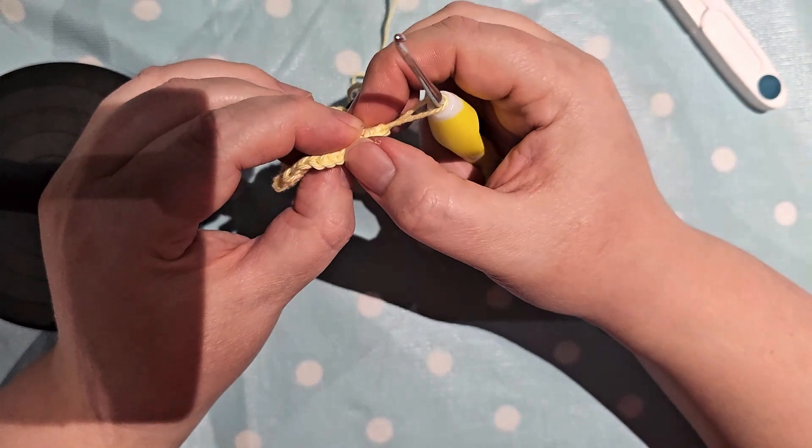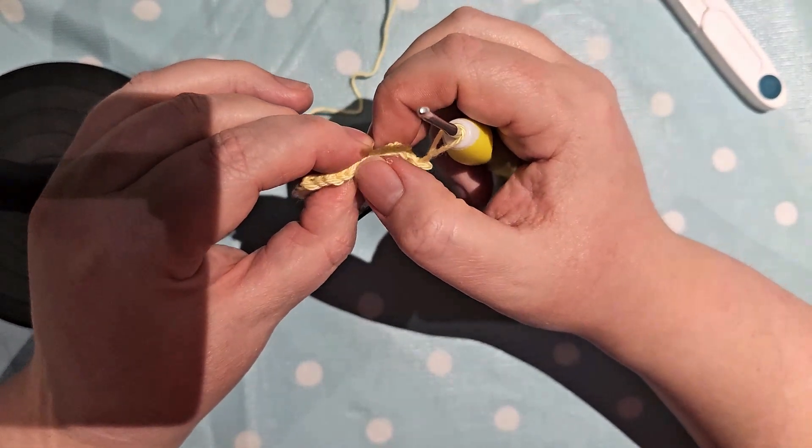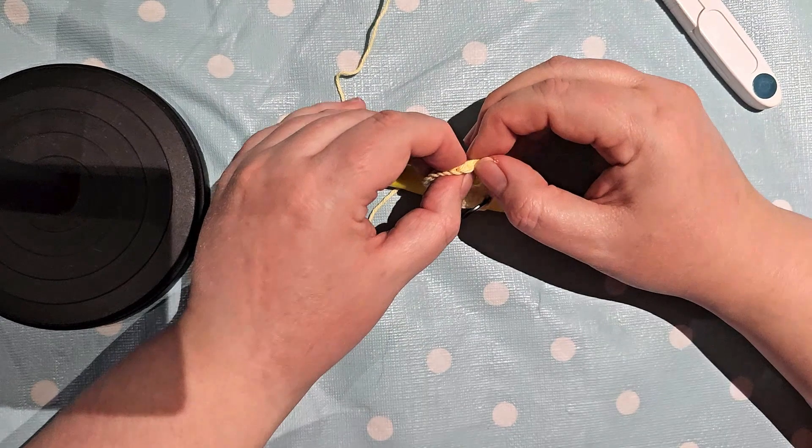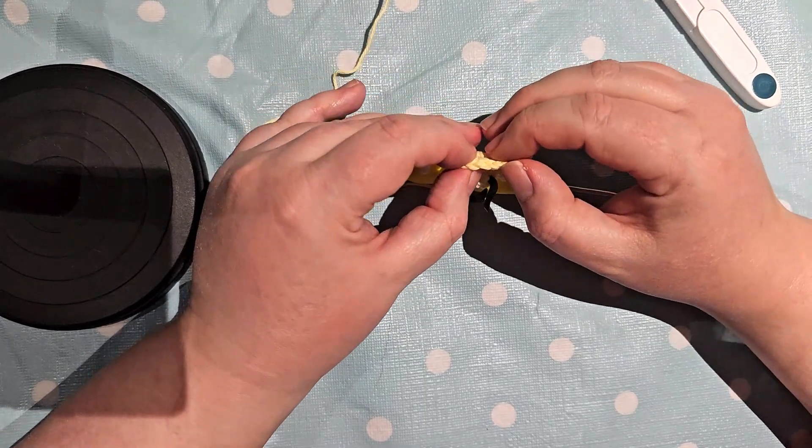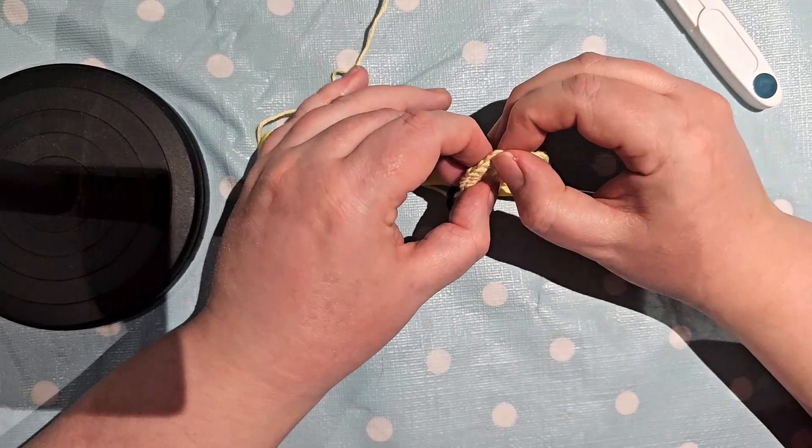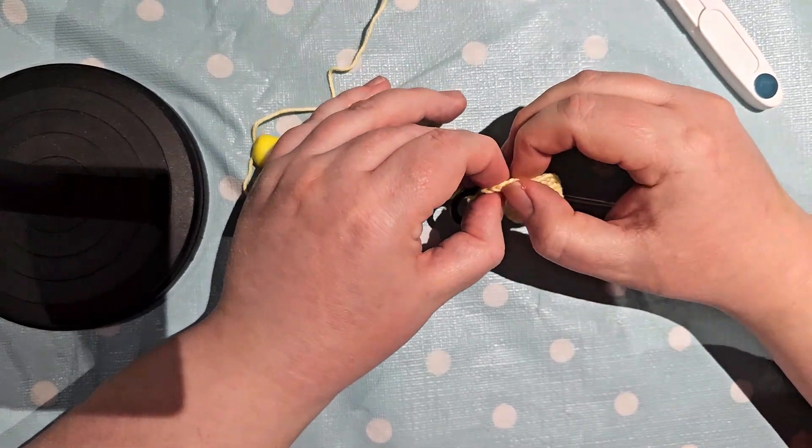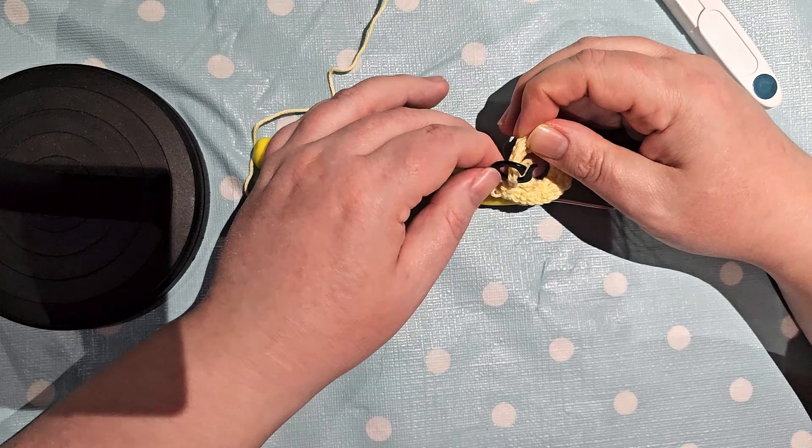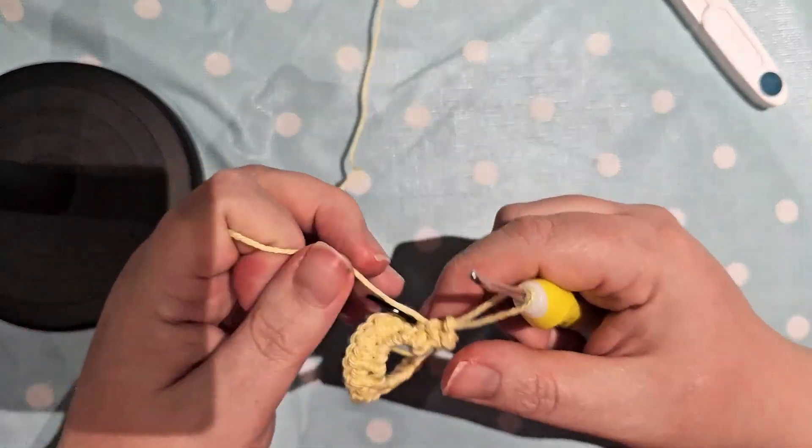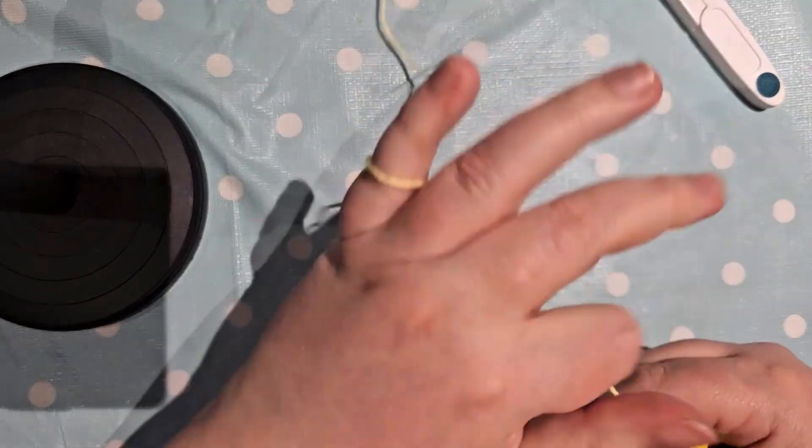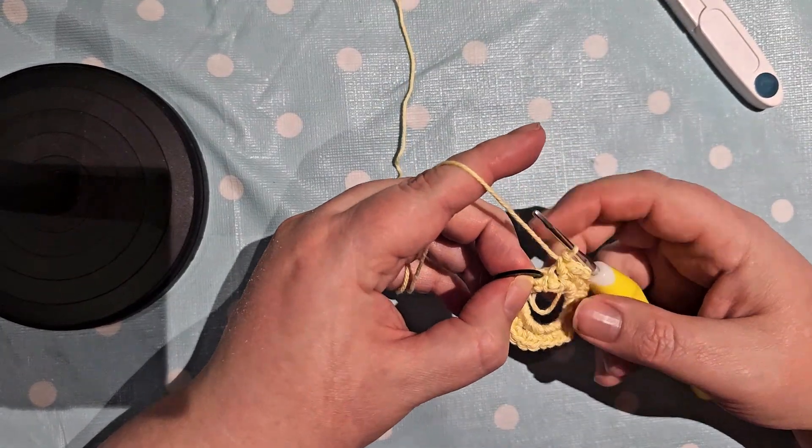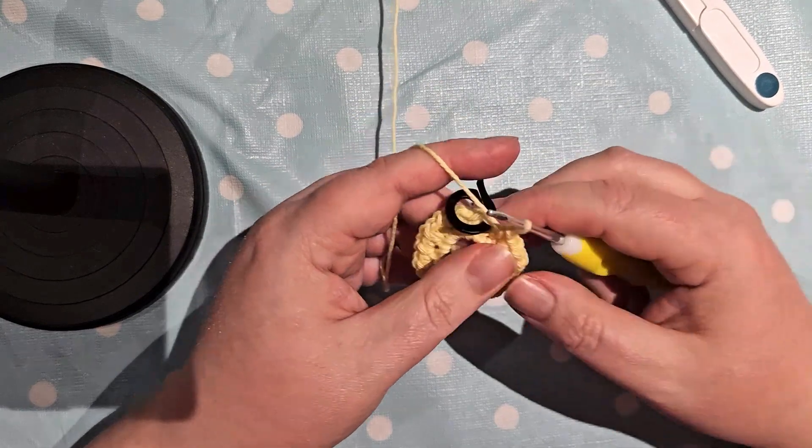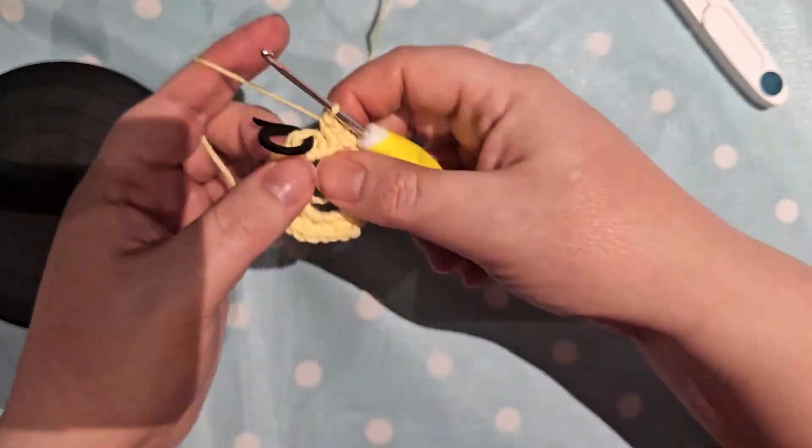I'm just gonna count these to double check. So the best way to do that is looking at the V's along the top. So counting: 1, 2, 3, 4, 5, 6, 7, 8, 9, 10, 11, 12, 13, 14, 15, 16, 17, 18, 19, 20, 21, 22, 23, 24, 25, 26, 27, 28, 29. So I've missed one somewhere. If you're missing one stitch then an extra one in the end will still make it work. But just make sure that you have 30 stitches all together.